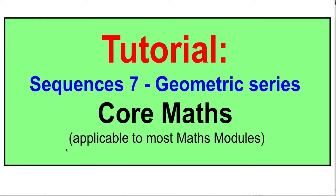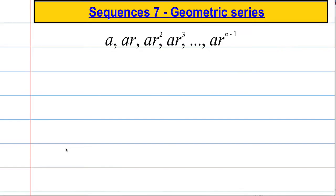Similar to an arithmetic series, we have to look at what a geometric series would be. This is a geometric progression, the first value being A, and then successive terms in this progression or in this sequence are getting bigger or are changing by a factor R.